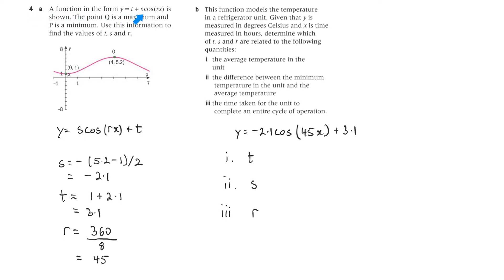For a function in the form y equals t plus s cosine rx is shown, the point Q is a maximum and P is a minimum. Use this information to find the values of t, s, and r.